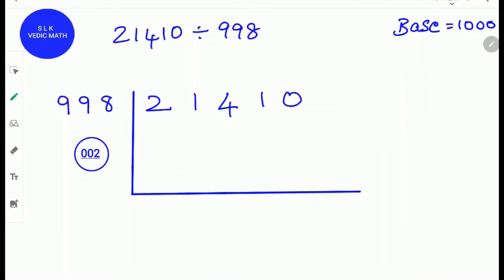Let's try another example. 21410 divided by 998. First, find a base for 998. The base for 998 is 1000. Next, put a slash three digits from the right-hand side. Why three digits? Because the base 1000 has three zeros. Next, find the difference between 998 and the base 1000, which is 2. Write 2 as 002.